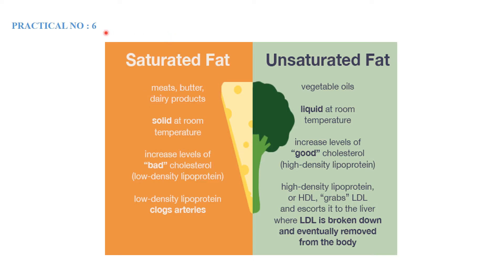Next we discuss fats — specifically saturated fat and unsaturated fat. Saturated fats are mainly found in meats, butter, and dairy products; they are solid at room temperature. Unsaturated fats are found in vegetable items and are liquid at room temperature. Saturated fats increase levels of bad cholesterol — very low density lipoproteins (VLDL) — whereas unsaturated fats are associated with LDL and HDL cholesterol metabolism.